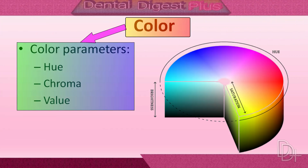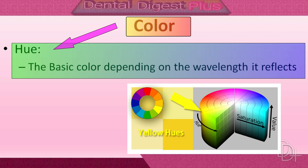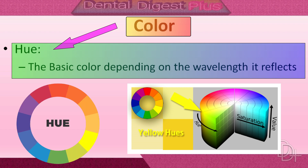Color selection is very important. The important parameters used to define color are hue, chroma, and value. Hue is the basic color depending on the wavelength it reflects. It is the dominant wavelength and represents the color of a material, such as blue, red, yellow, green, etc.